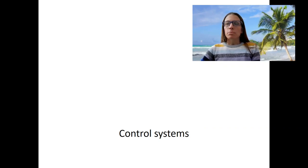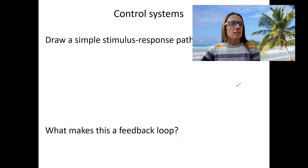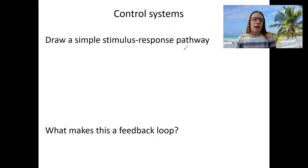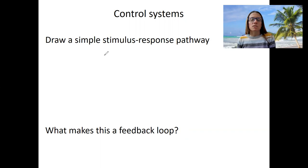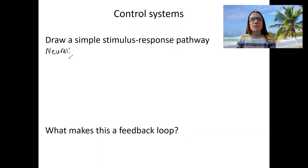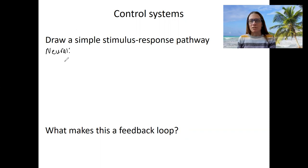I'd like to start by reviewing a stimulus-response pathway. This is a formal learning check, but you should be writing diagrams down as I do things. A simple stimulus-response pathway — I say simple because you'll see more complex ones mostly in the spring. Most of the examples I've drawn so far have been neural, so a stimulus-response pathway in the nervous system.